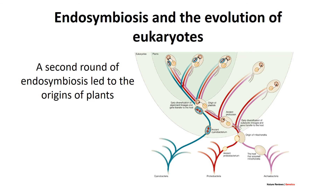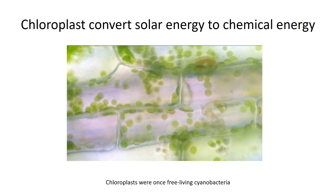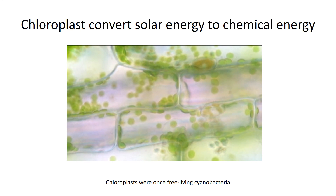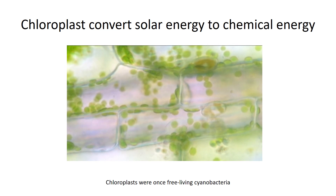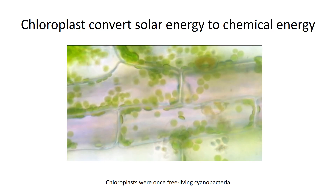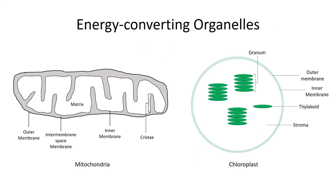Interestingly, one group of eukaryotes went through a second round of endosymbiosis, and that led to the origin of plants. Plants did not evolve photosynthesis — they acquired it from cyanobacteria. This is an image of Elodea canadensis, an aquatic plant. You can see those very large plant cells, and those green balls moving around are chloroplasts — that's where photosynthesis actually takes place. Chloroplasts were once free-living cyanobacteria acquired through a second round of endosymbiosis. Plants also have mitochondria and do aerobic respiration. So all eukaryotes have mitochondria, but plants have two energy-converting organelles: mitochondria and chloroplasts — both the result of endosymbiosis.